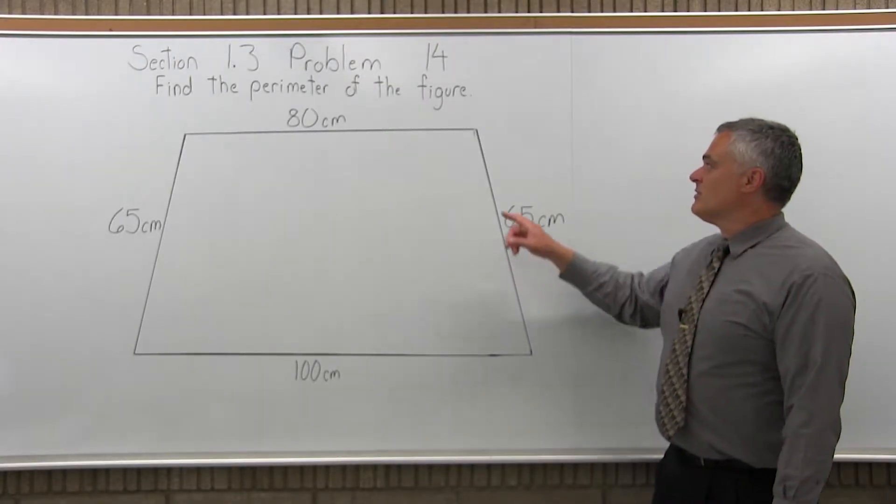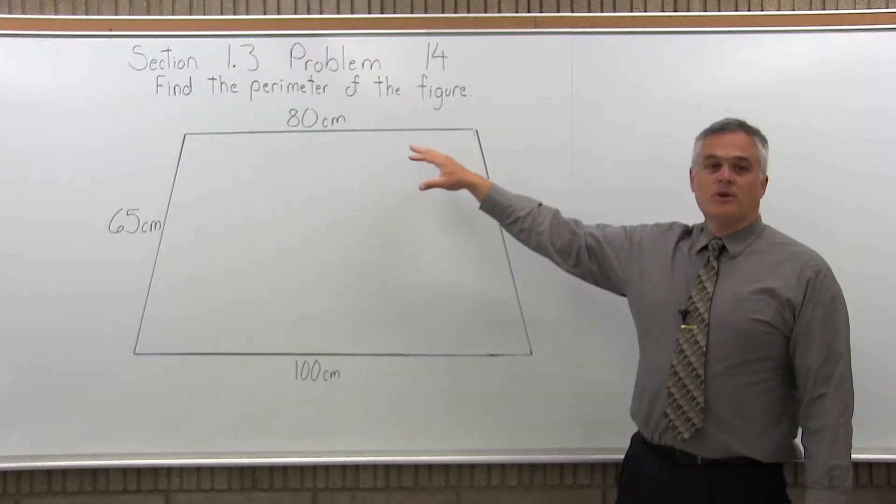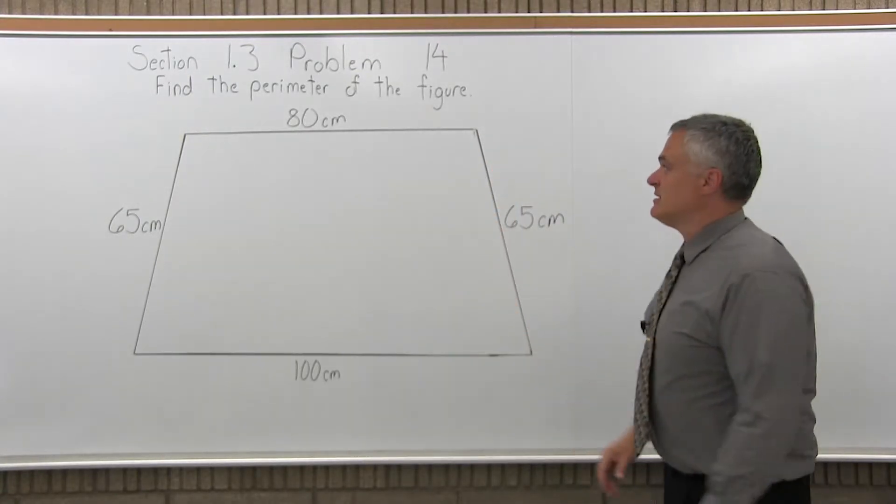It says, find the perimeter of the figure, and we have a figure drawn, and the length of all the sides are given, and what we mean by perimeter is the distance all the way around the edges. So, what we have to do is just add these links together.